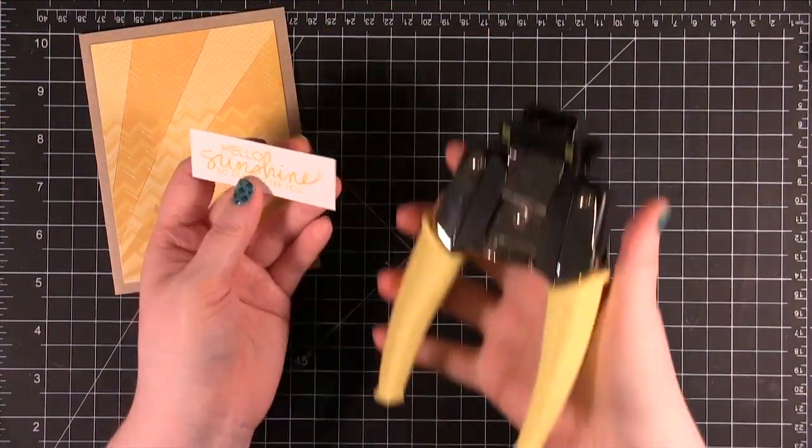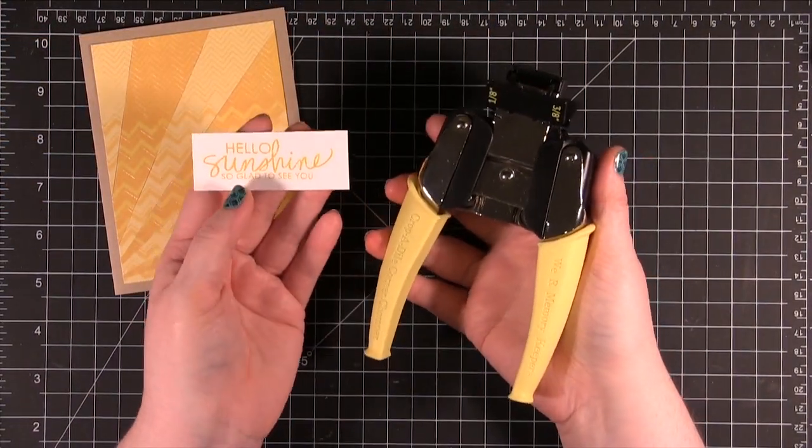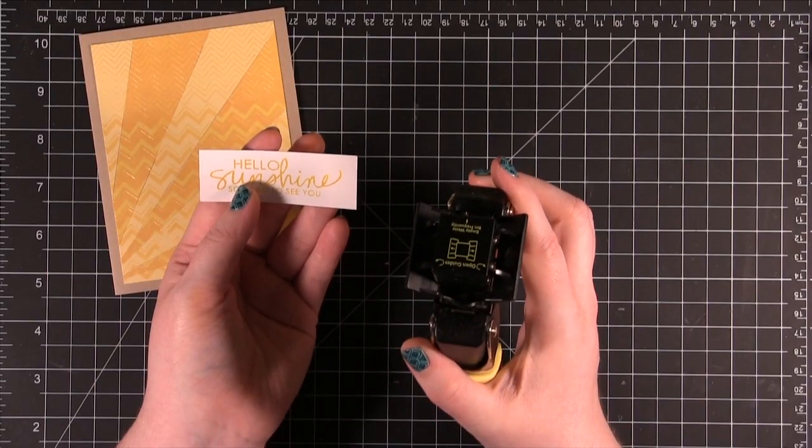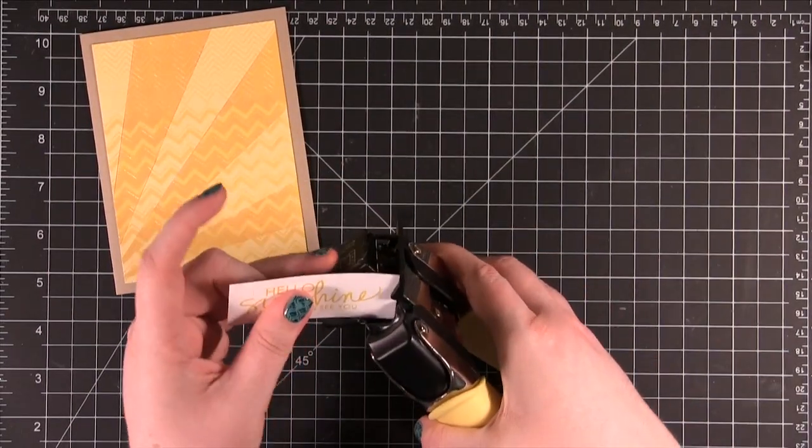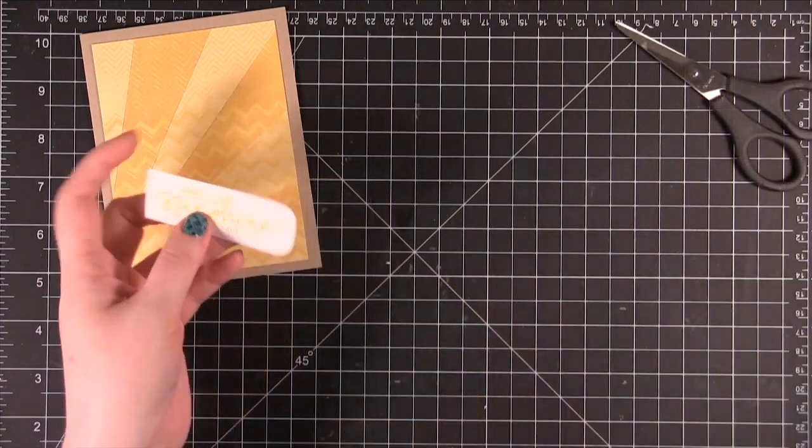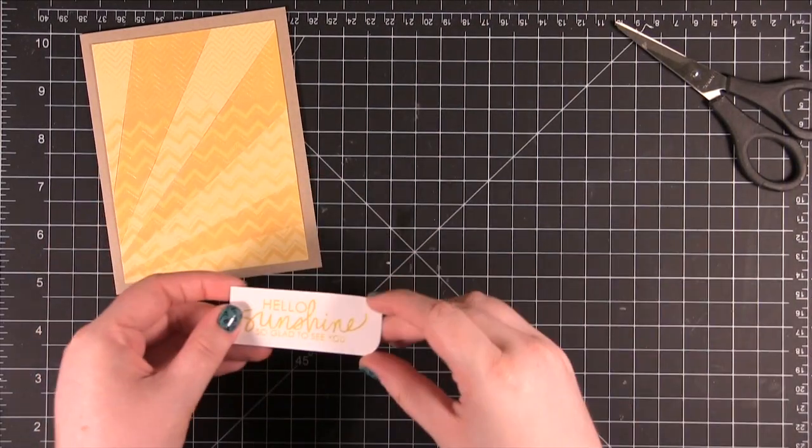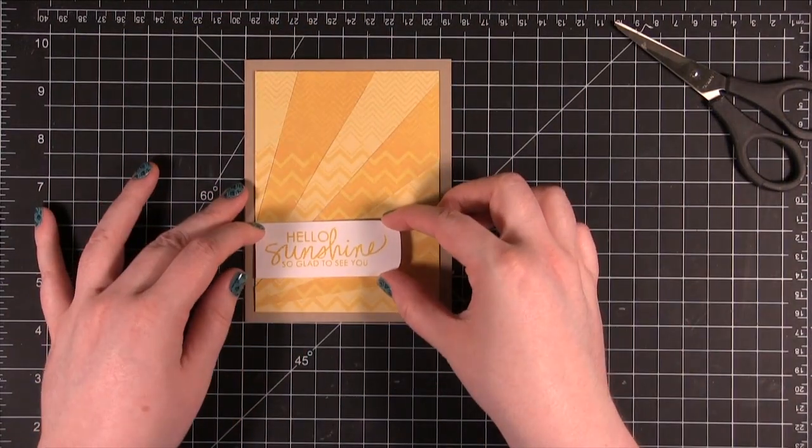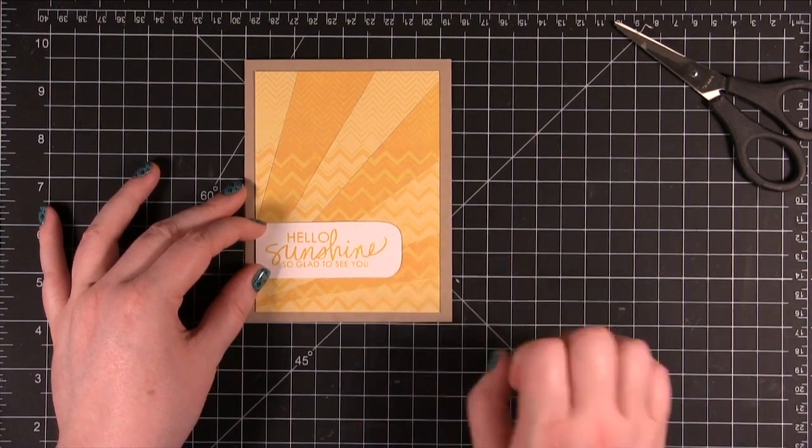All right, I'm going to use the yellow We Are Memory Keepers Corner Chomper. And I'm going to use the 3/8ths and I'm just going to take all these corners. And just do the two corners on the side. And I'm going to be adhering this down at the bottom just like that.